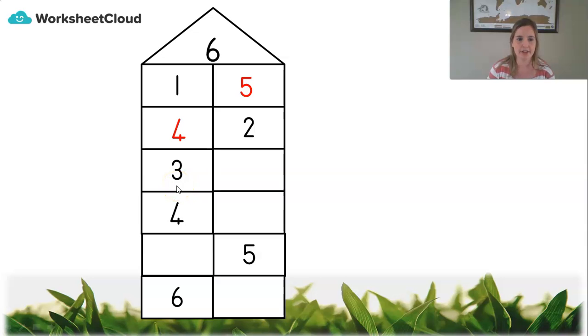Okay, the next floor. We've got three guests booked in. How many on the next side? Three. Because three and three makes six.